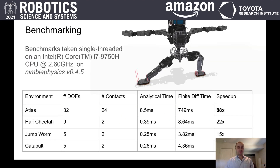So how fast is it exactly? The speedup of using Nimble's analytical gradients relative to finite differencing grows as the robots increase in complexity. On an Atlas robot, we achieve a single-core speedup of 88 times over finite differencing. Even on a simpler robot like the half cheetah from OpenAI Gym, we achieve a speedup of 22x. It's worth emphasizing that this is all on a single core of a CPU, so you can still embed Nimble within a larger parallel optimization architecture, since we don't hog all of your CPUs to achieve this performance.